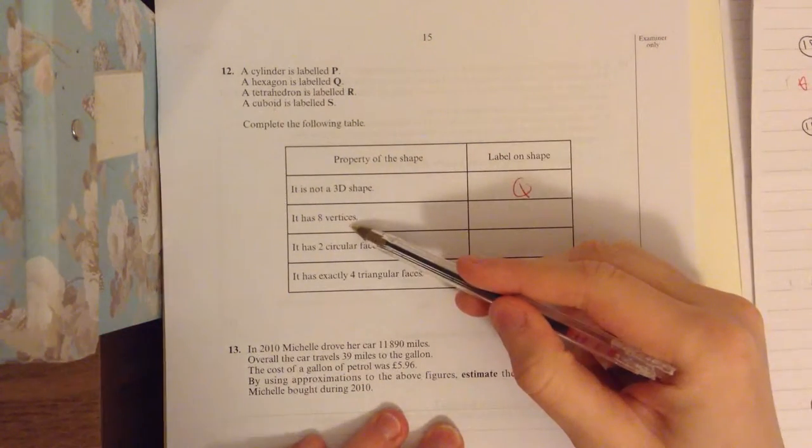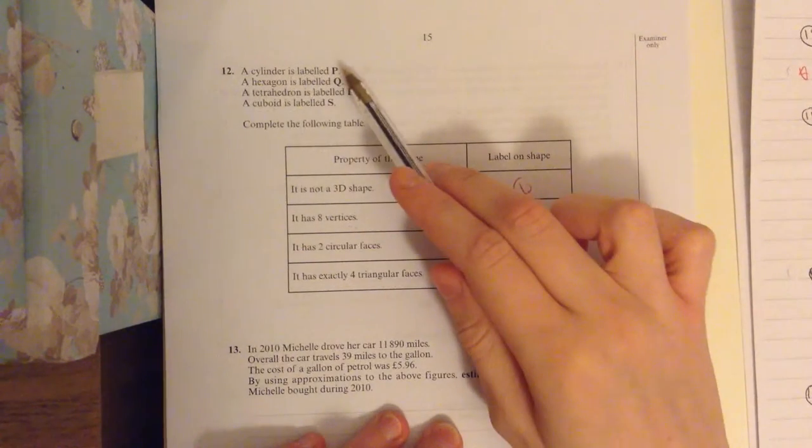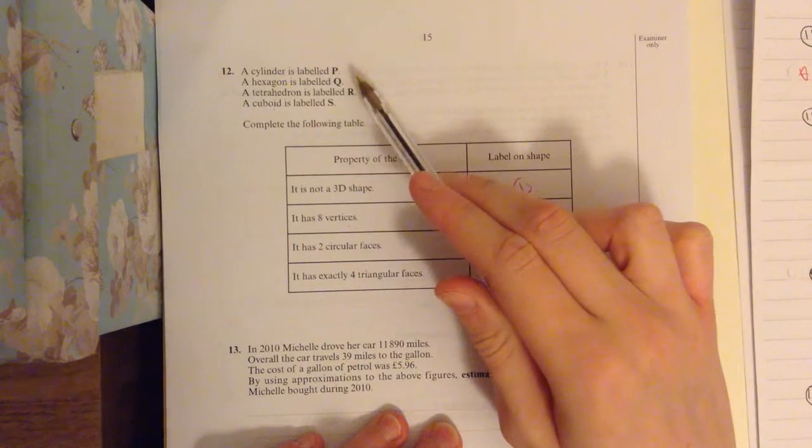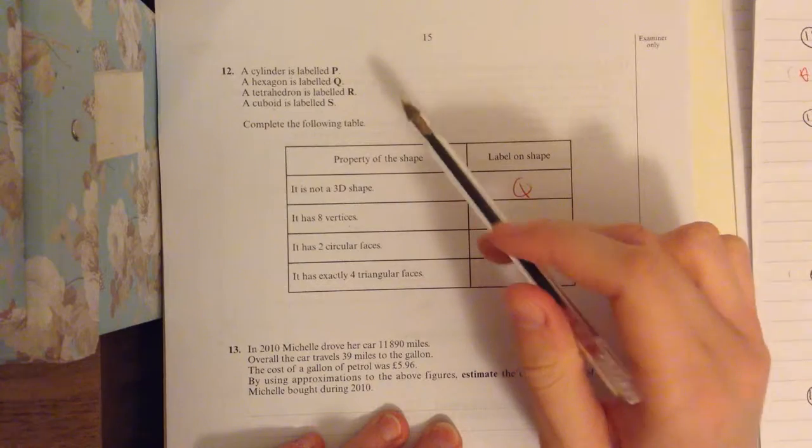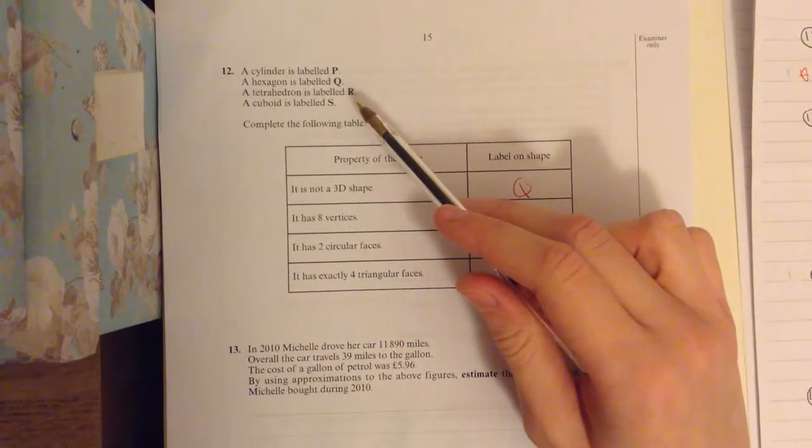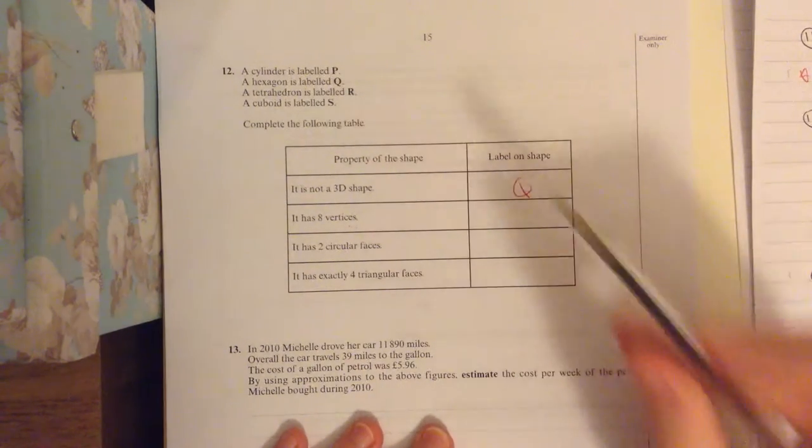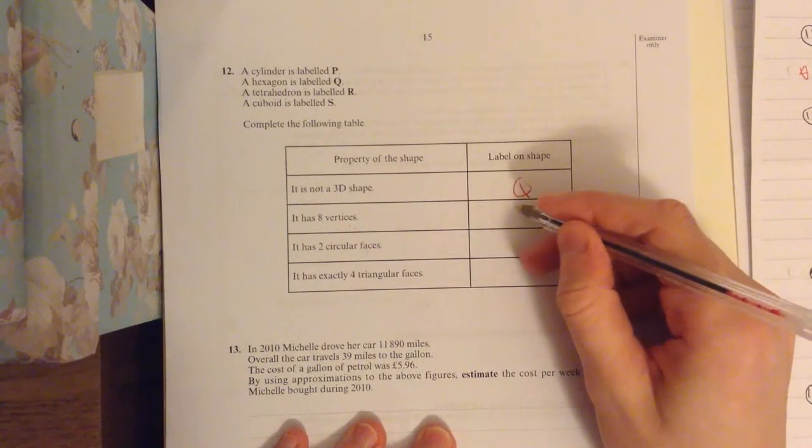It has eight vertices. Vertices means corners. So a cylinder doesn't have any corners. A hexagon is a 2D shape. A tetrahedron is a shape with four triangular faces. So that has one, two, three, four vertices. And a cuboid has eight vertices. So that is going to be S-cuboid.